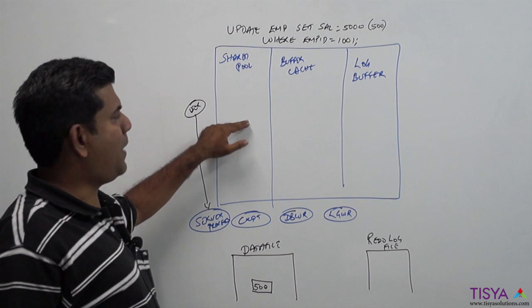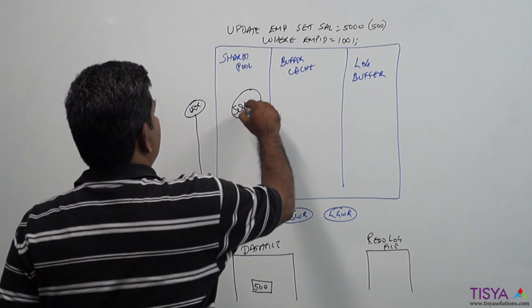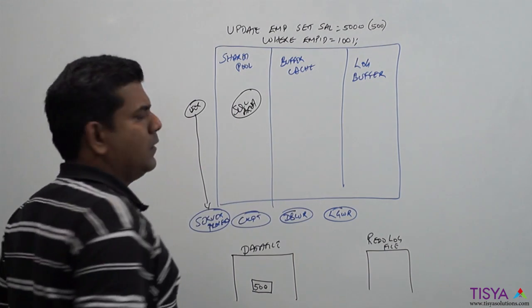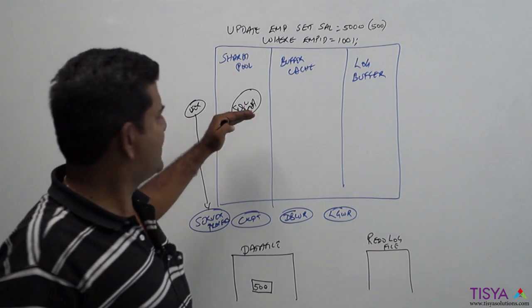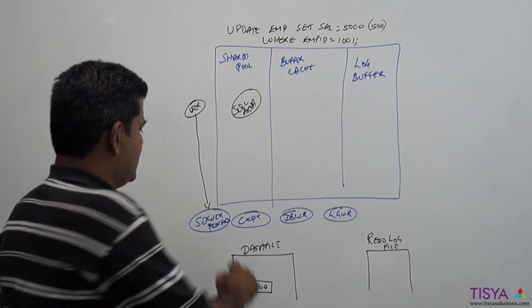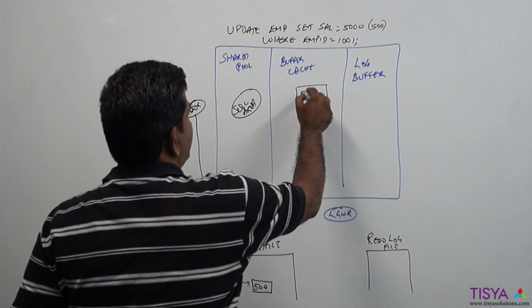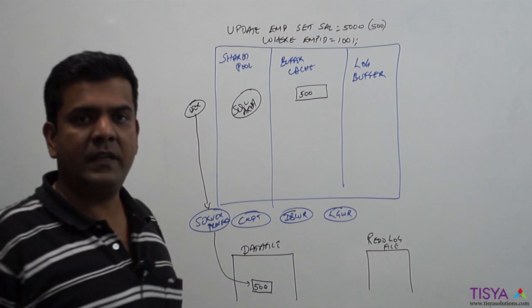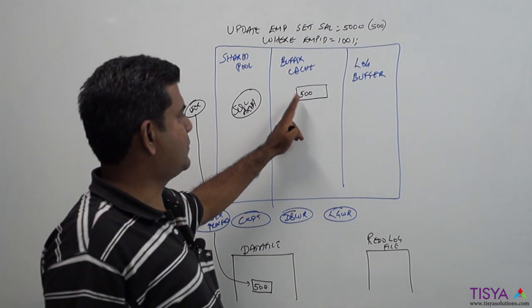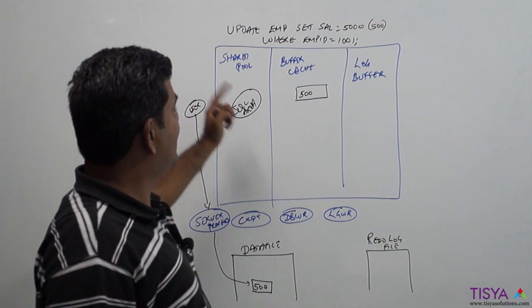When this query comes, as usual the SQL will get parsed. Within the shared pool we are going to have an SQL area. We assume the parse has happened and we're going to execute. When executing, the server process is going to pick this block and bring it into the buffer cache. So there is this row in the block which is being brought into the memory and this is going to be updated.